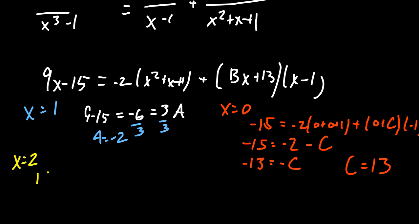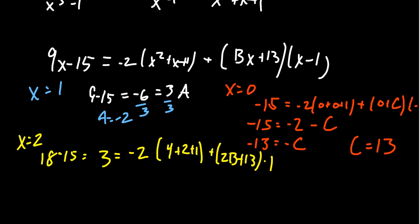On the left-hand side, you're going to get 18 minus 15, which turns out to be 3. On the right-hand side, you get negative 2 times 2 squared is 4 plus 2 plus 1. We're then going to get 2B plus 13 times 2 minus 1, which is 1.